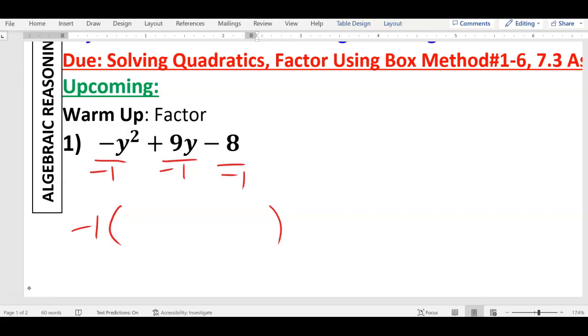All this does is change every sign. This negative becomes a positive, this positive becomes a negative, and this negative becomes a positive. Change all the signs. So now we got Y squared minus 9Y plus 8, okay?